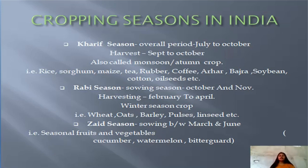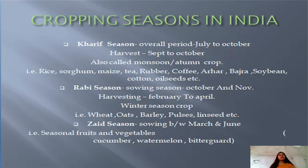There are three types of seasons in India. The first is the Kharif season — sowing period is July to October, harvesting is September to October. It is the monsoon season and an autumn crop. Examples include rice, sorghum, maize, tea, rubber, coffee, arhar, soybean, and cotton oilseeds. The second is the Rabi season — sowing is in October and November, harvesting is February to April, and it is a winter season crop. Examples include wheat, oats, barley, pulses, and lucerne.